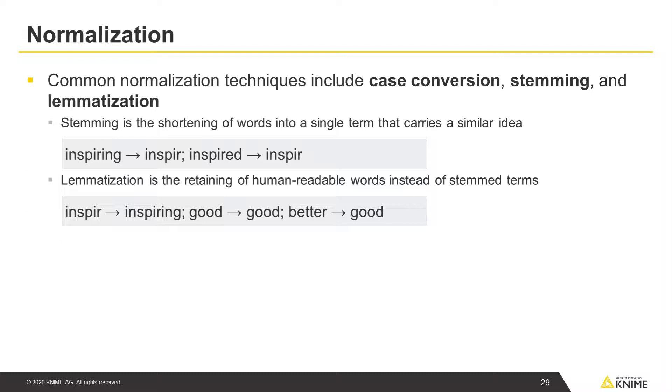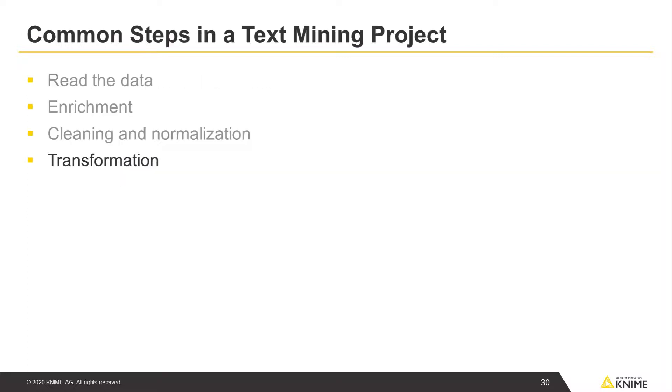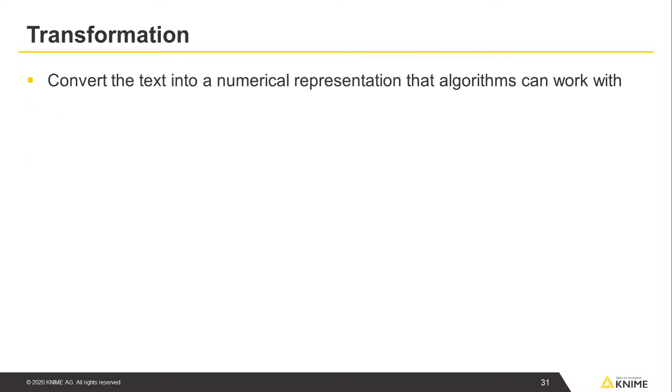The next step in the text analysis process is the transformation step. Our goal at this step is to convert the text in our corpus into a numerical representation that algorithms can work with.